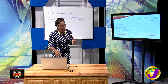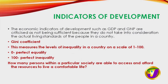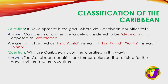Other Caribbean countries also have similar visions related to 2030 or otherwise. Apart from GDP, GNP, and levels of education, there is one particular indicator to focus on — the Gini coefficient. The Gini coefficient is a ratio that measures how equal a society is, ranging from zero to 100, with zero being perfect equality and 100 being perfect inequality. It asks: how many persons within a society are able to access and afford the resources to live a comfortable life?